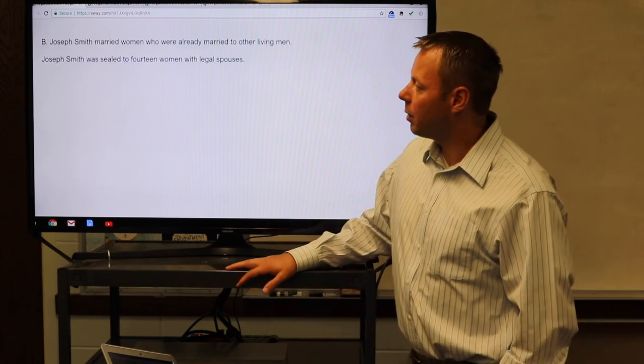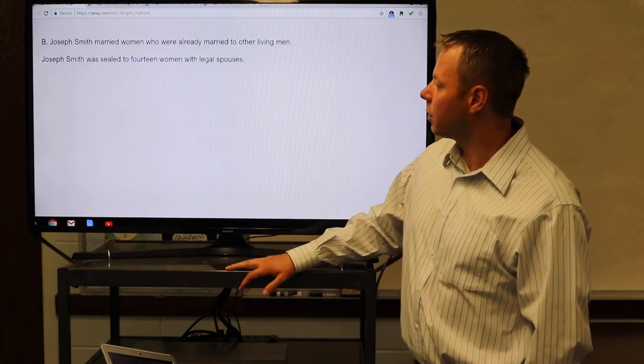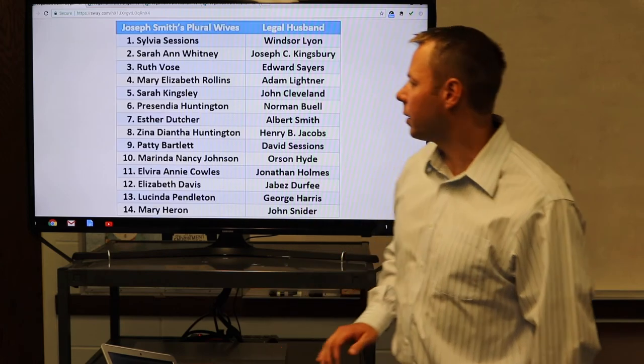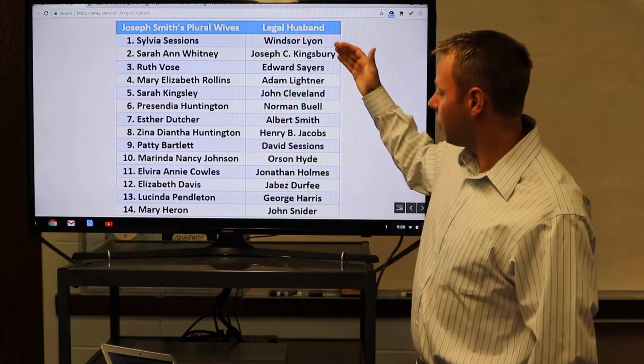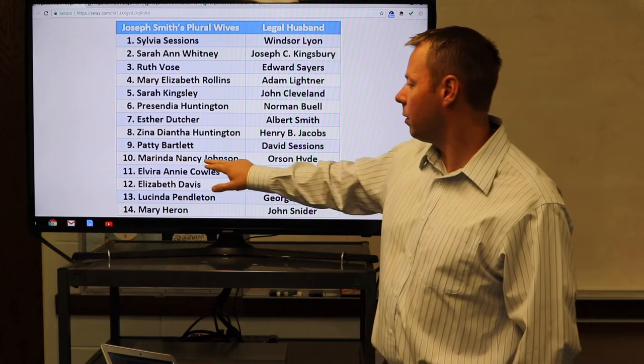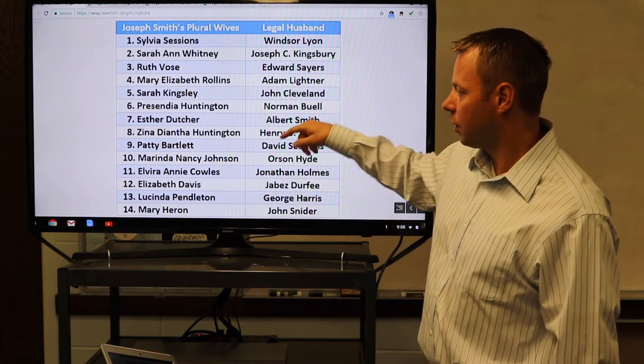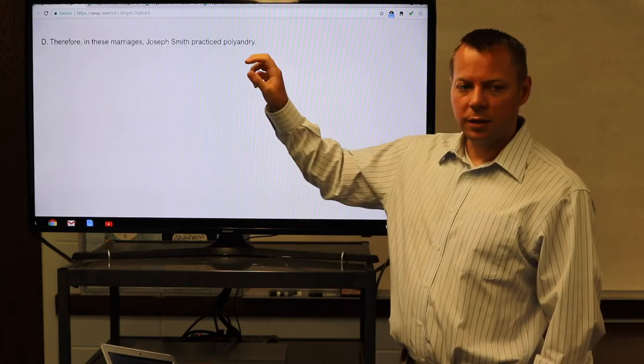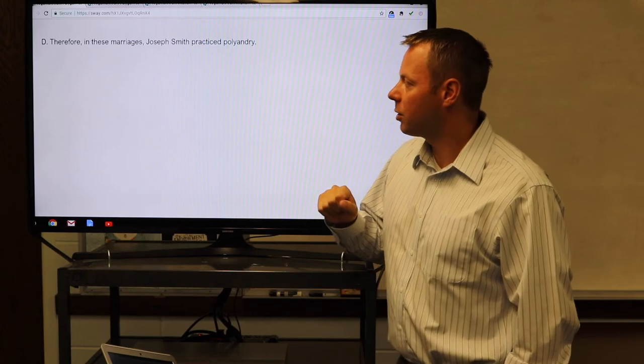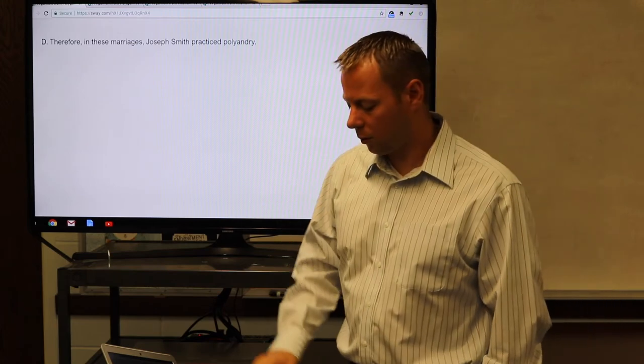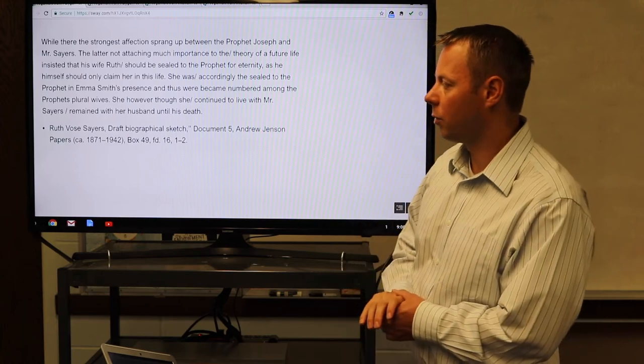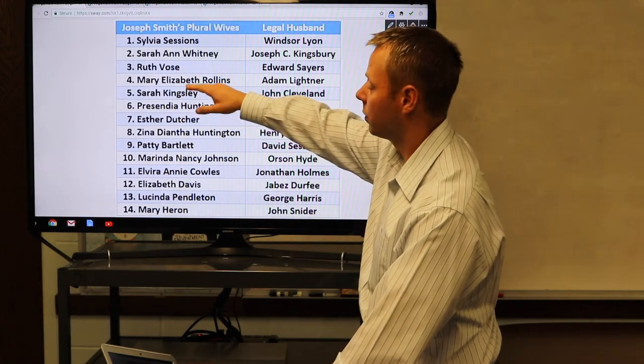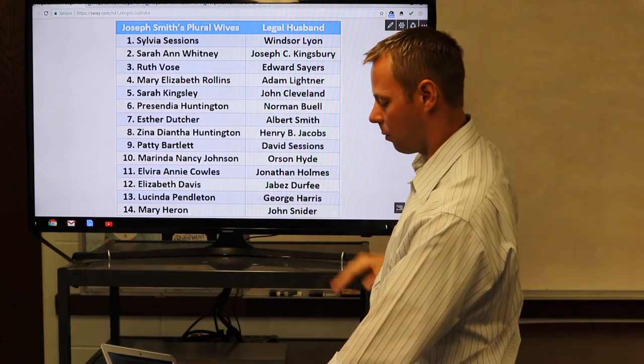What about Premise B? Joseph Smith married women who were already married to other living men. That is true. Joseph Smith was sealed to 14 women with legal spouses that were living. Here's Orson Hyde, his wife, Marinda Nancy Johnson. What about this? Therefore, in these marriages, Joseph Smith practiced polyandry. We need to look at this a little bit more closely. Let's look at the evidence from Ruth Voss Sayers. Her husband was Edward Sayers. There, the strongest affection sprang up between the prophet, Joseph, and Mr. Sayers. The latter, not attaching much importance to the theory of a future life, insisted that his wife, Ruth, should be sealed to the prophet for eternity, as he himself should only claim her in this life.